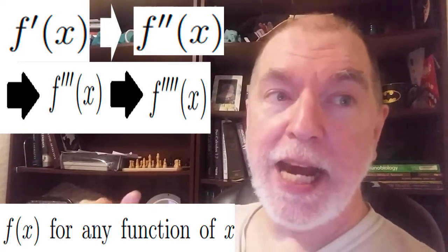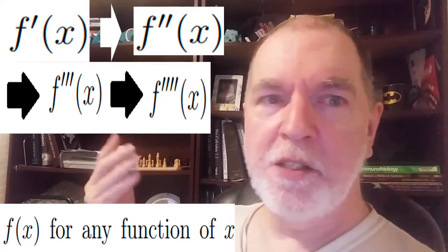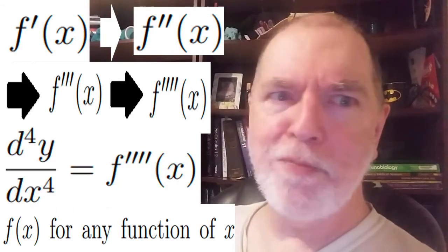Whereas with the dy by dx, the Leibniz notation, you see you put a little number. And it's just a matter of remembering where to put that number. So there's your fourth derivative of y with respect to x.